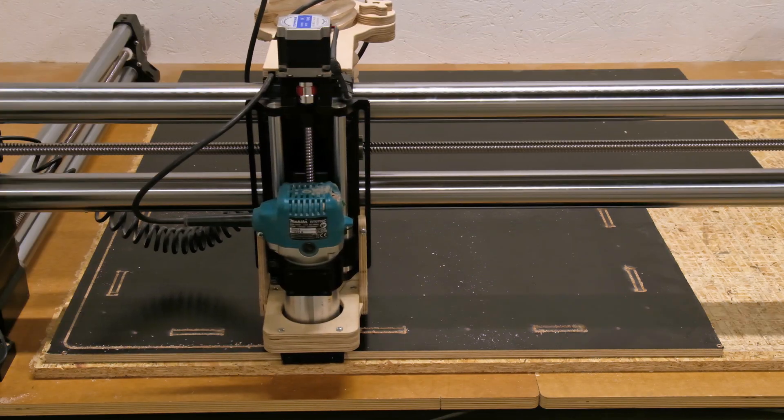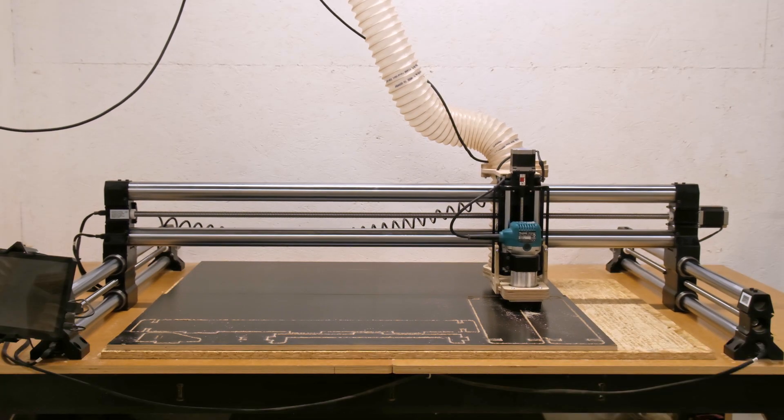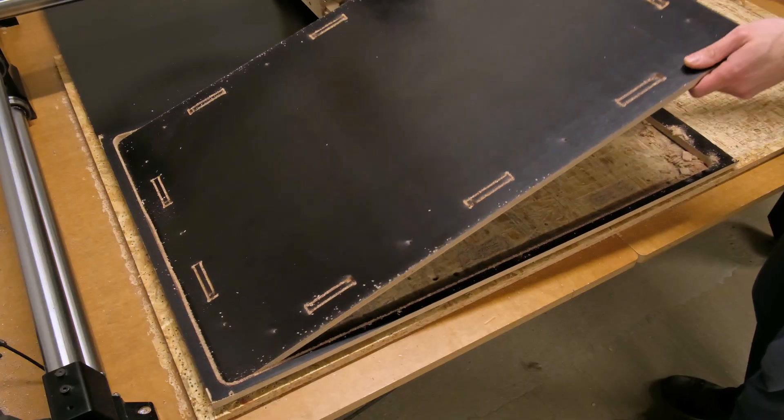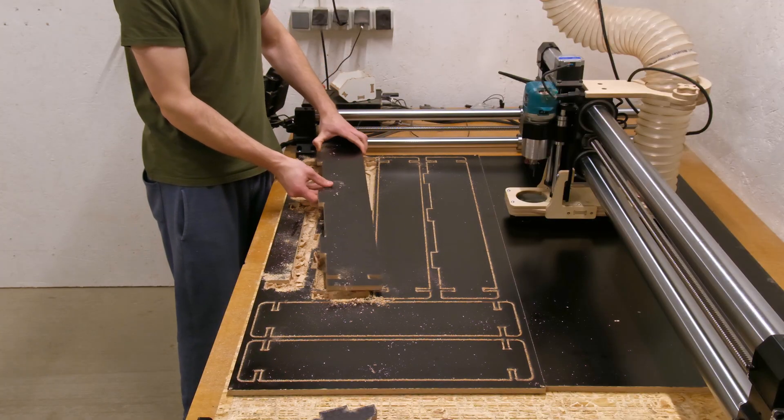For the test build, we are using laminated sheets that we already have laying around in the workshop. First, we are cutting the base for the offcut tower and a few of the wall components.